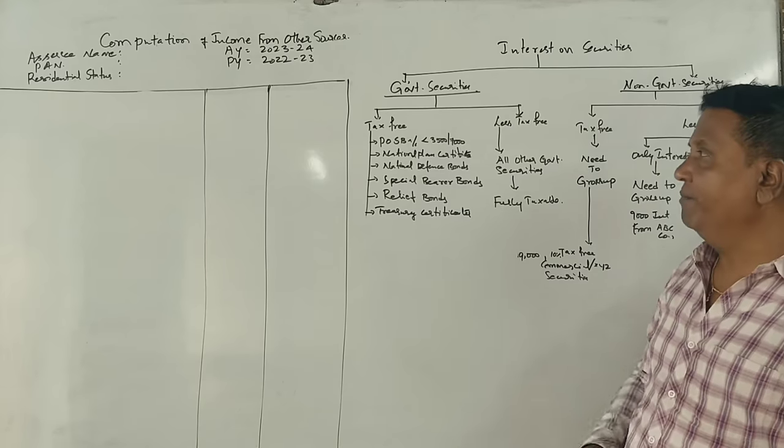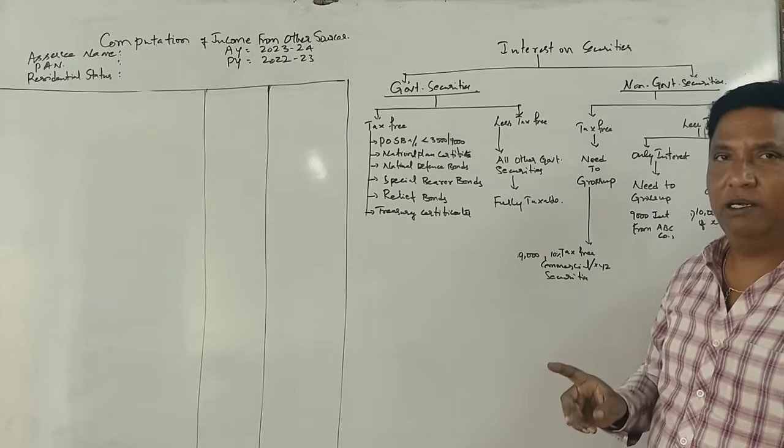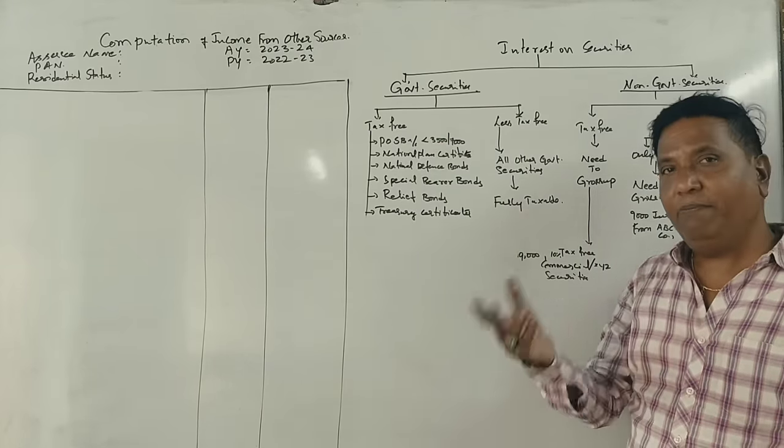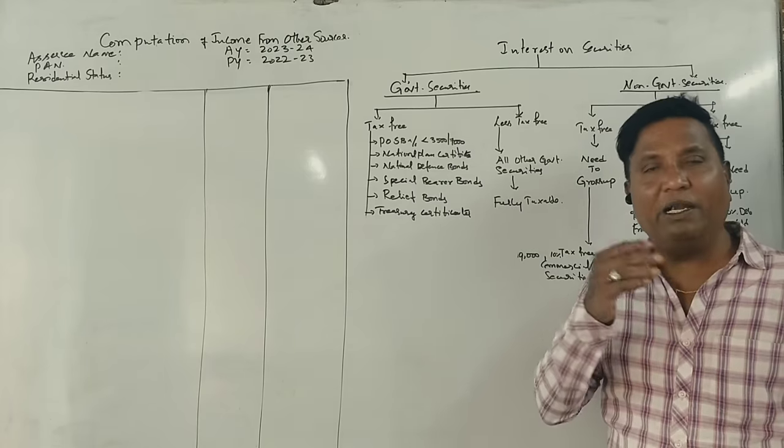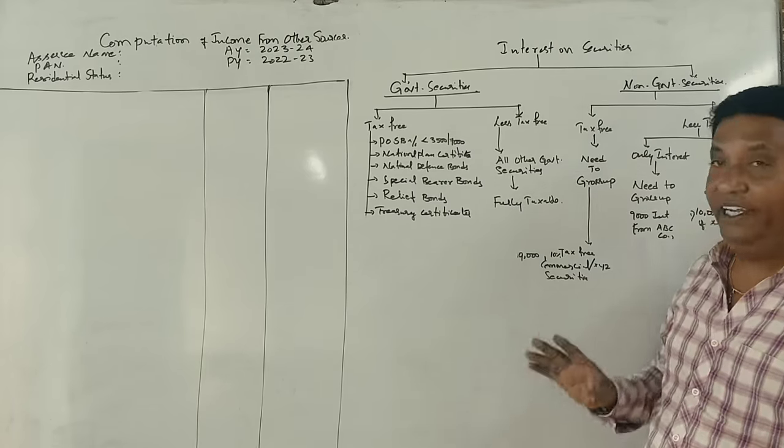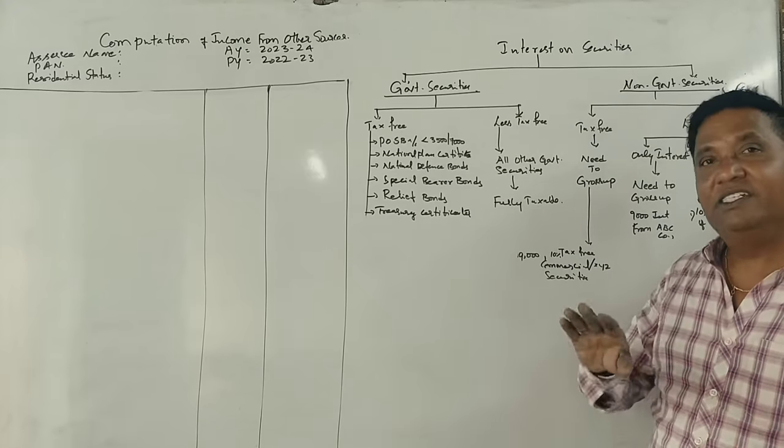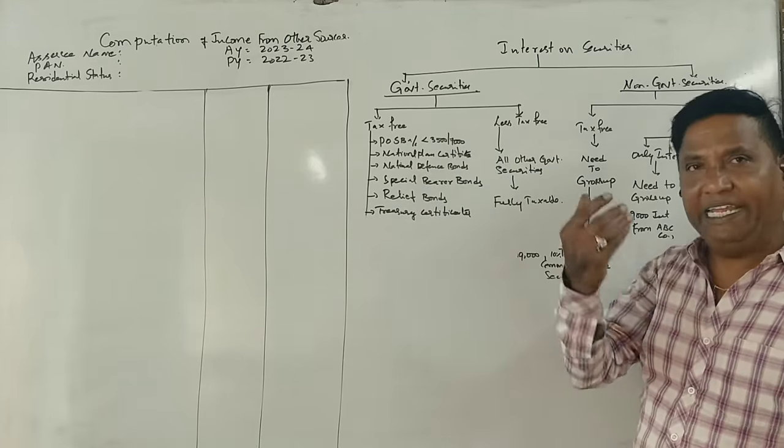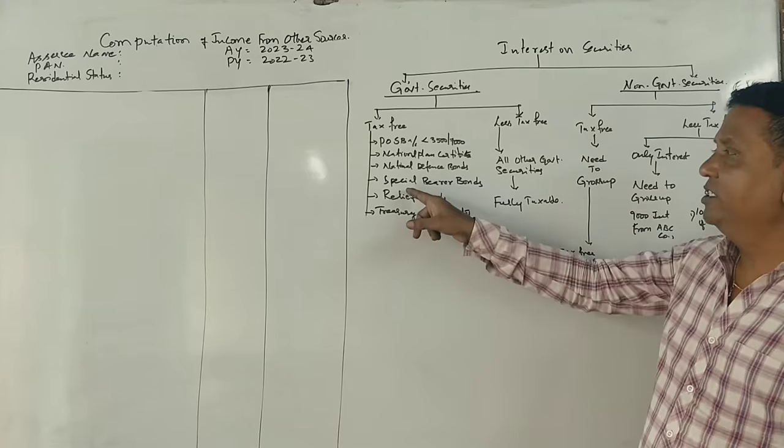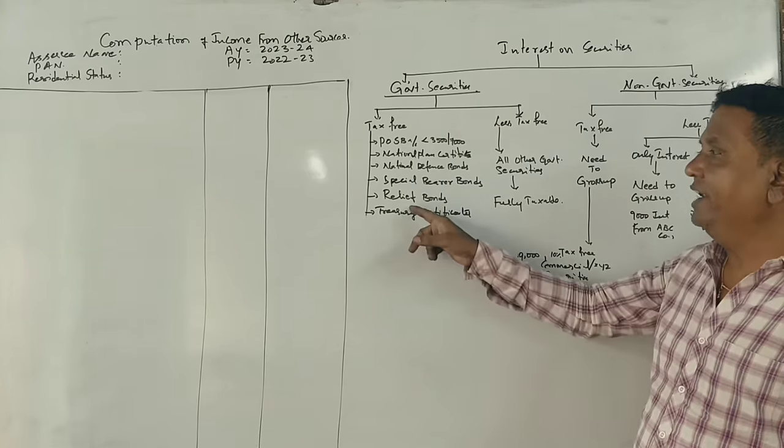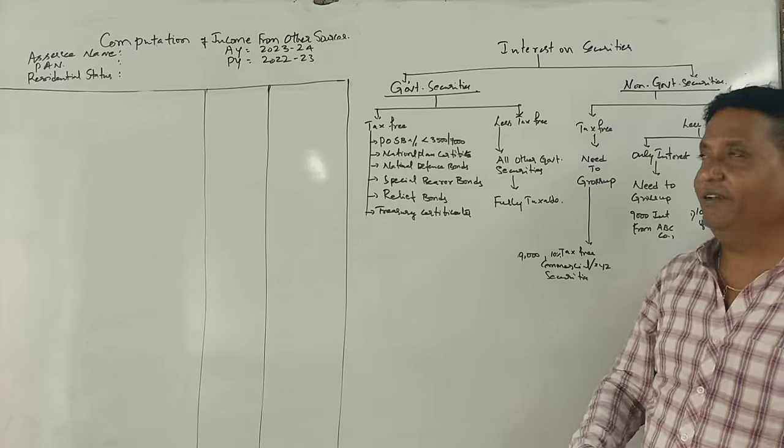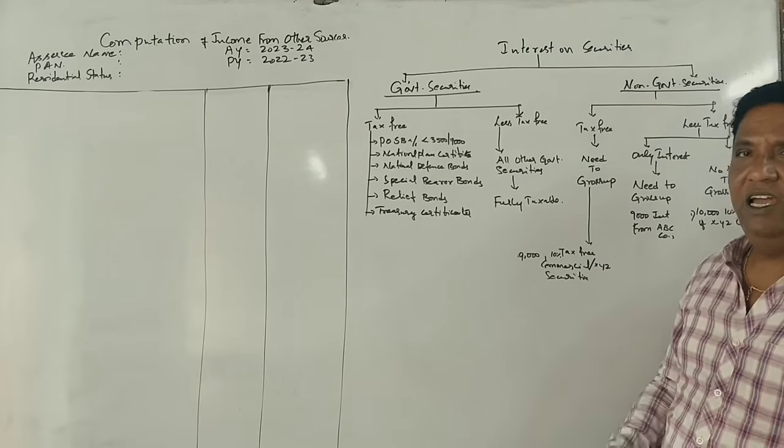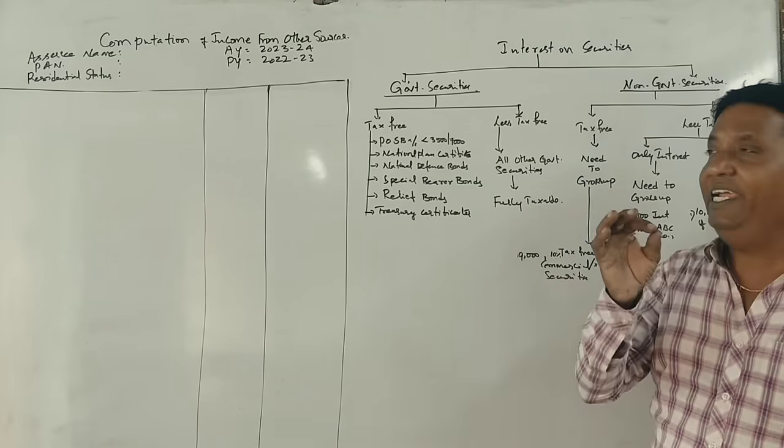In case of Post Office Savings Bank, joint account interest 7,000 is exemption. National Plan Certificate exempted, National Defense Bonds exempted, Special Bearer Bonds exempted, Relief Bonds exempted, Treasury Certificates exempted. In other government securities, interest is fully taxable.